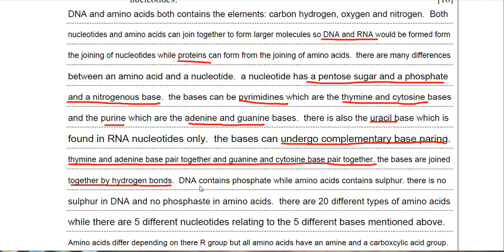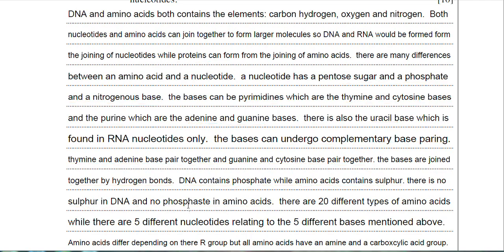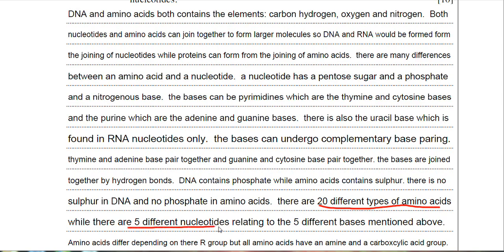As I mentioned earlier, DNA contains phosphate while amino acids contain sulfur. I've highlighted again to the examiner that there is no sulfur in DNA and no phosphate in amino acids. I've pointed out that there are 20 different amino acids but there are five different nucleotides. Remember, there are five different bases and therefore you can have five different nucleotides.